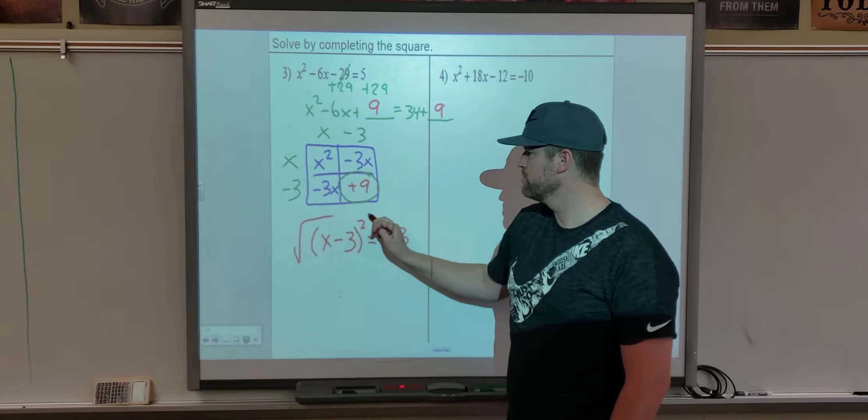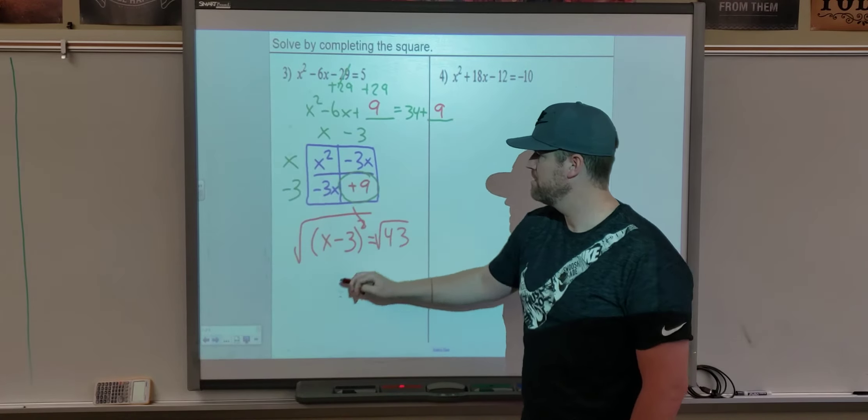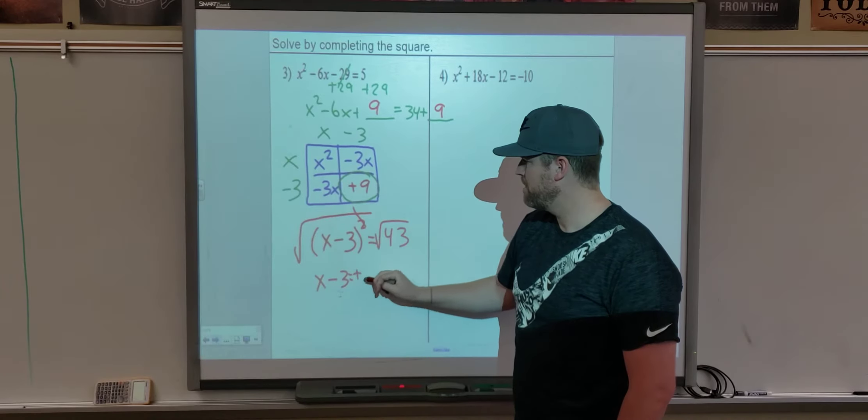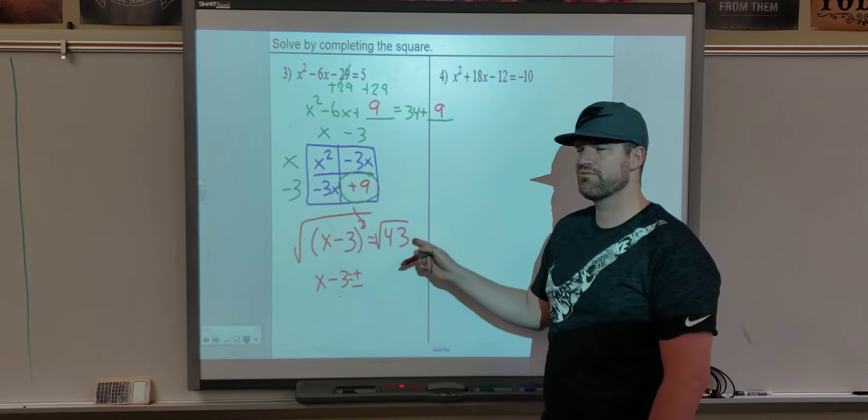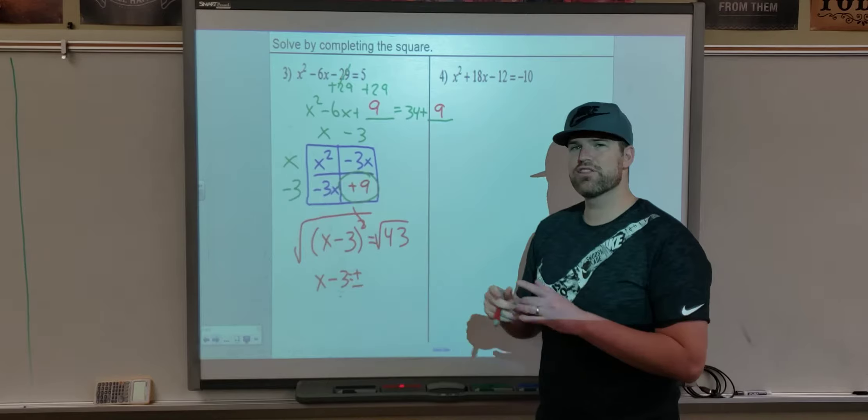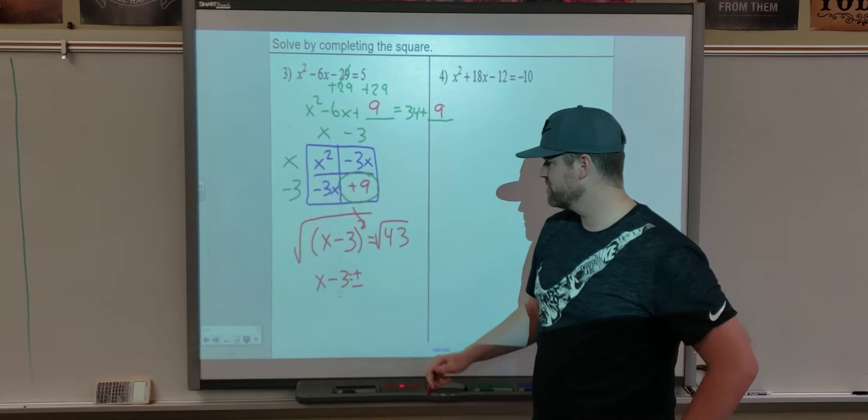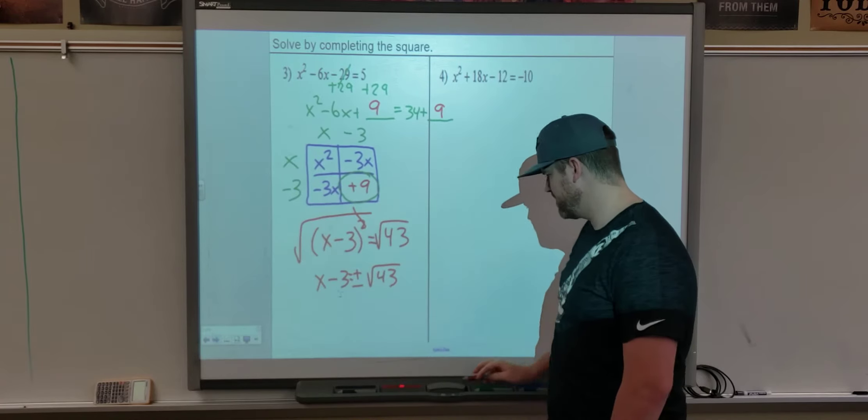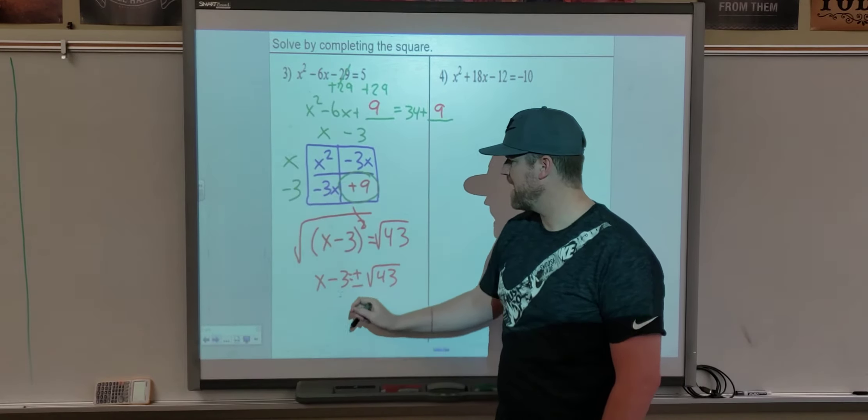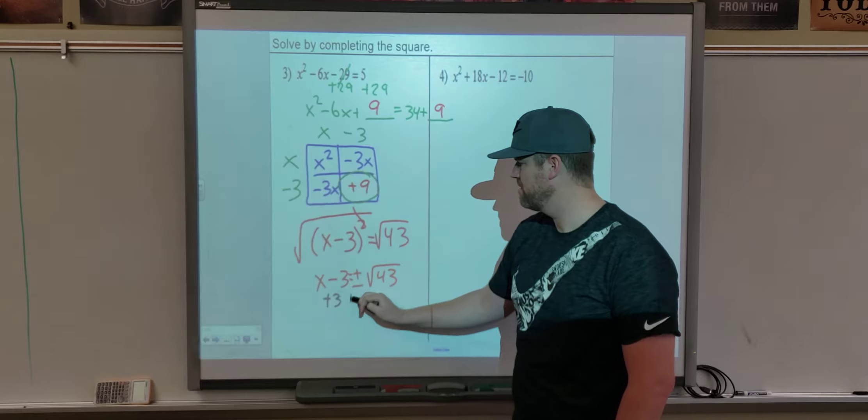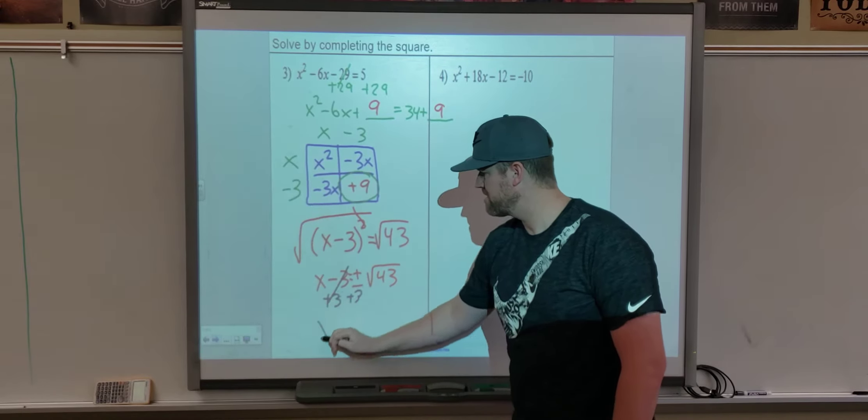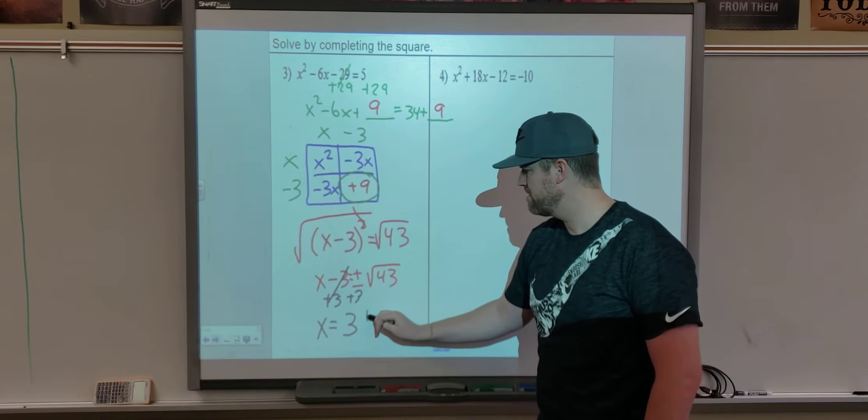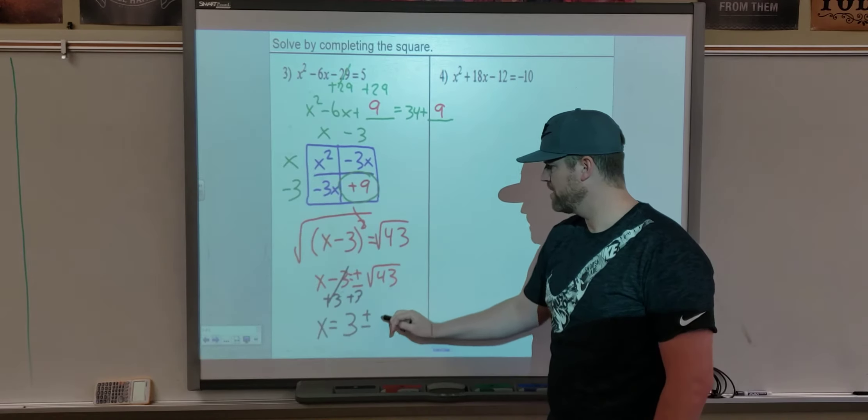Take the square root of both sides. x minus 3 equals positive and negative square root 43, which 43 is a prime number. We can't use the factor tree. So we leave it as square root of 43. And then finally, add the 3 to both sides. And we get x equals 3 plus or minus square root 43.